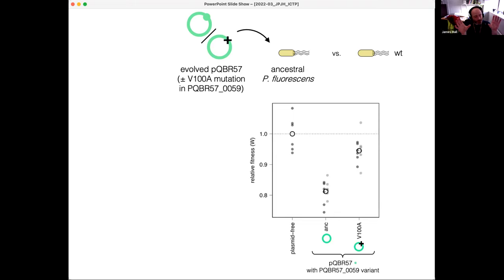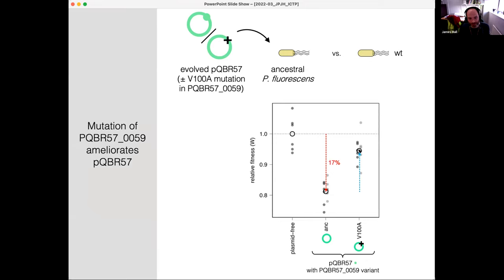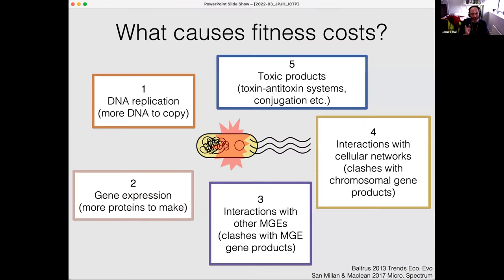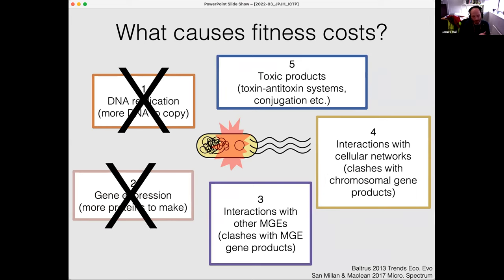With pQBR103, a 300 kb plasmid, a single base pair mutation effectively resolves a 70% fitness cost. Compensatory evolution is important, and the fact that it can happen so effectively shows us that the main costs of the plasmid don't come from having more DNA — they're still maintaining these plasmids without the same cost. It doesn't come from gene expression and it's not toxic products either, because conjugation rates remain the same in compensated strains and very specific genes are affected. This leaves us with potential interactions either with other mobile genetic elements or with the chromosome in the cell.